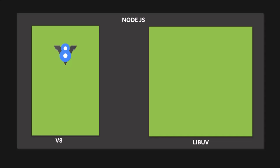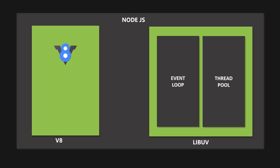LibUV gives Node access to the underlying computer's operating system, file system, networking, and many more things. That's why it's another important dependency of Node.js runtime. Besides that, LibUV also implements two extremely important features of Node.js: the EventLoop and the ThreadPool. EventLoop is responsible for executing easy tasks like callback functions and network I/O. On the other hand, ThreadPool is used to process heavy tasks like file access or compression.